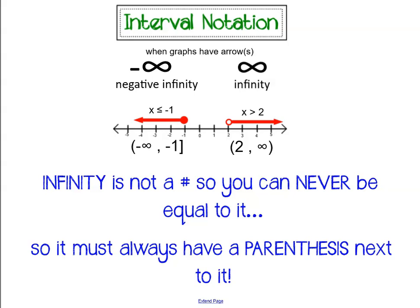Sometimes your graph might have an arrow. An arrow represents that it continues on infinitely in a specific direction. One could be in the negative direction. We call that symbol negative infinity. If the arrow moves in the right direction, we call that arrow positive infinity.